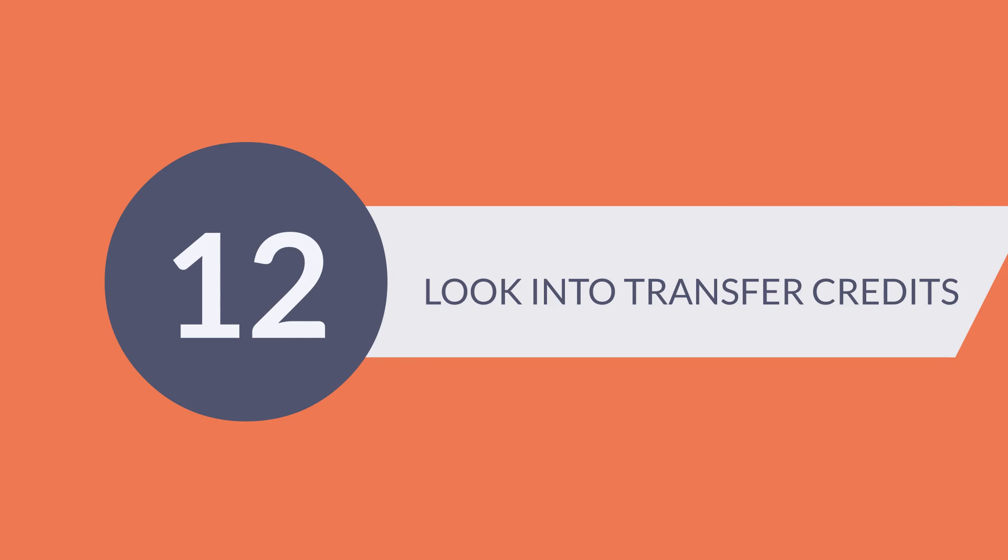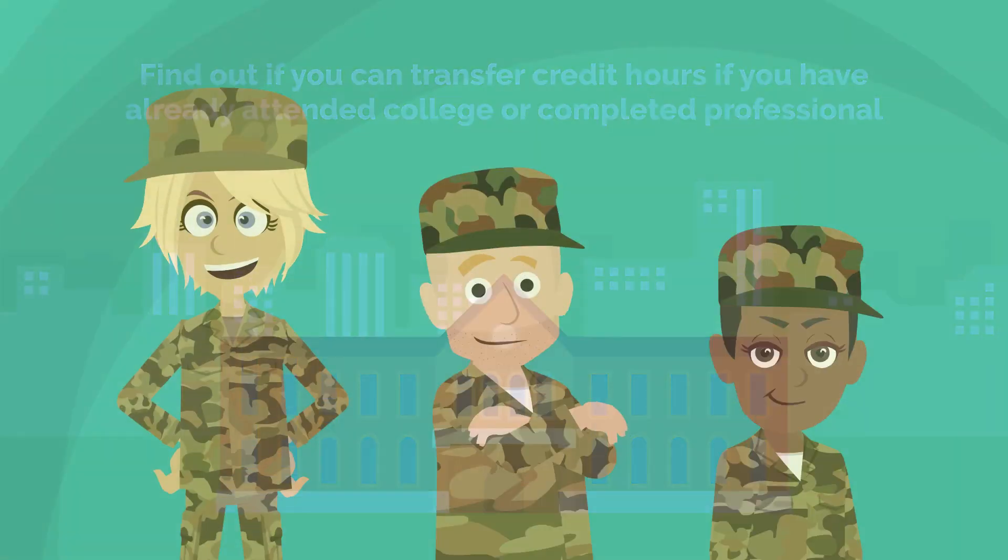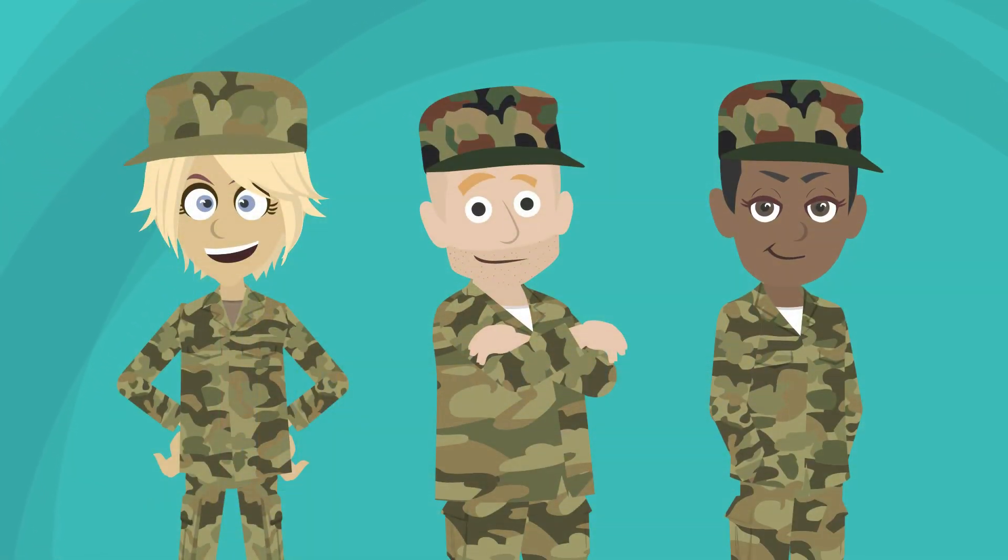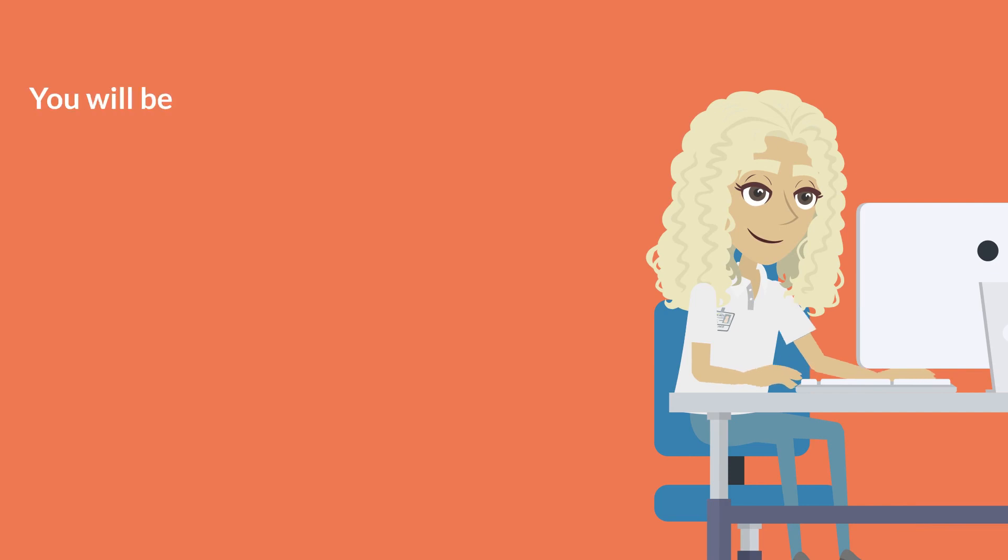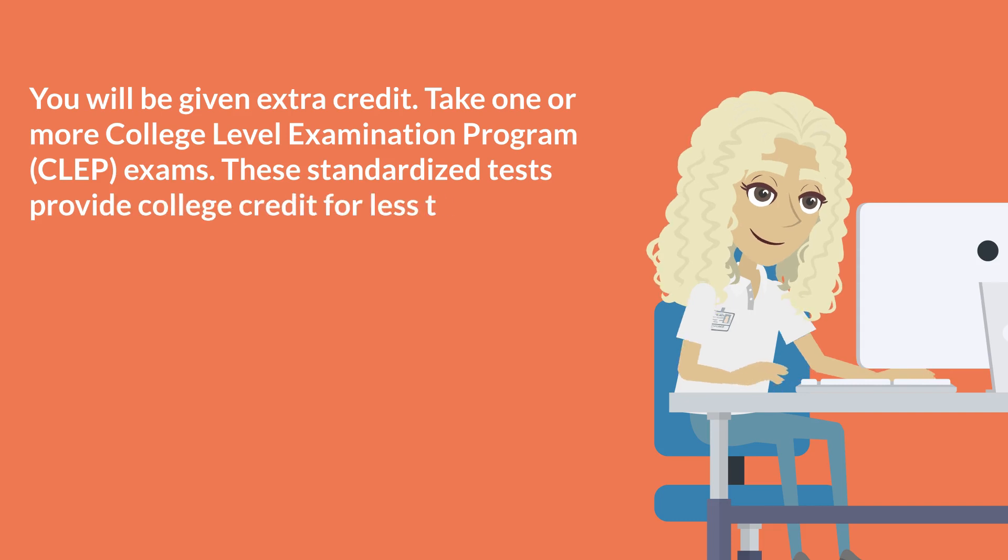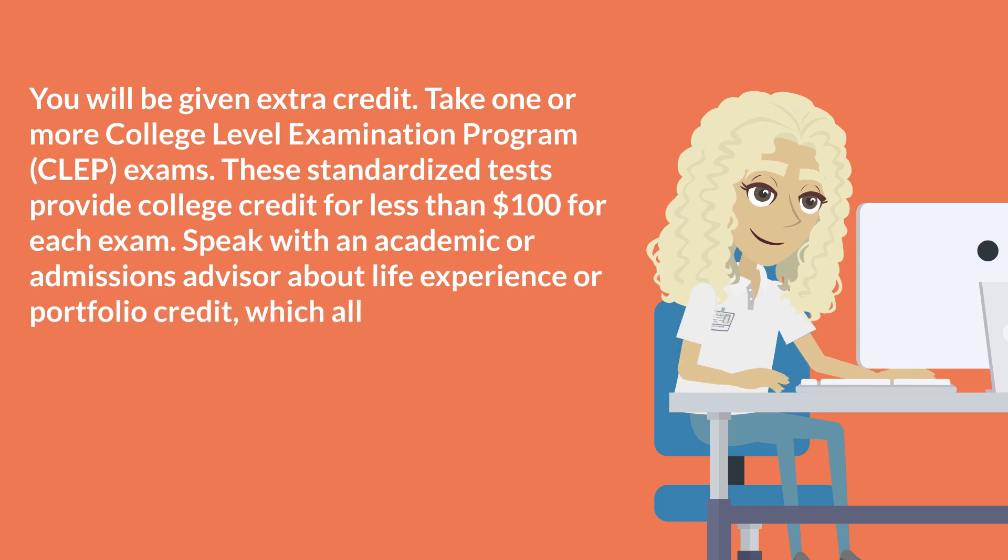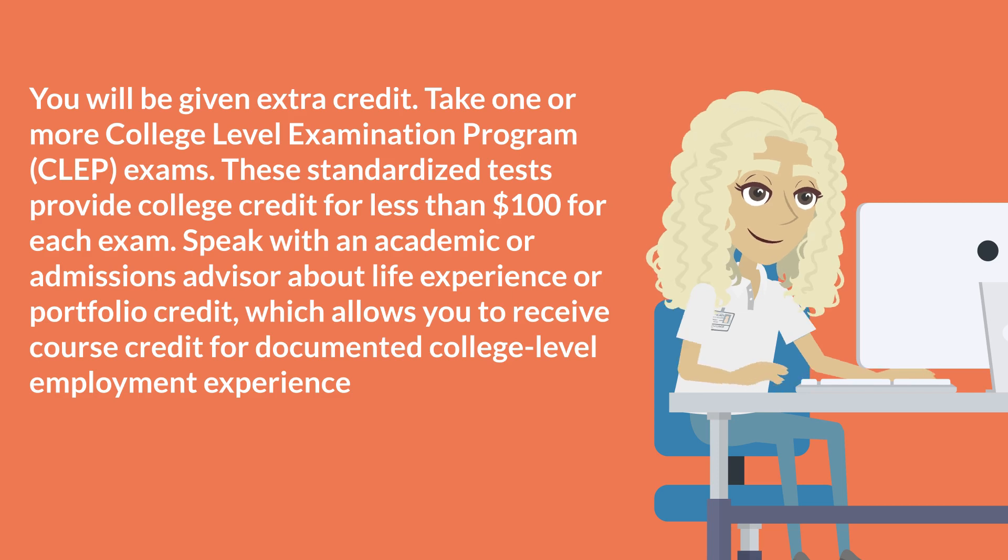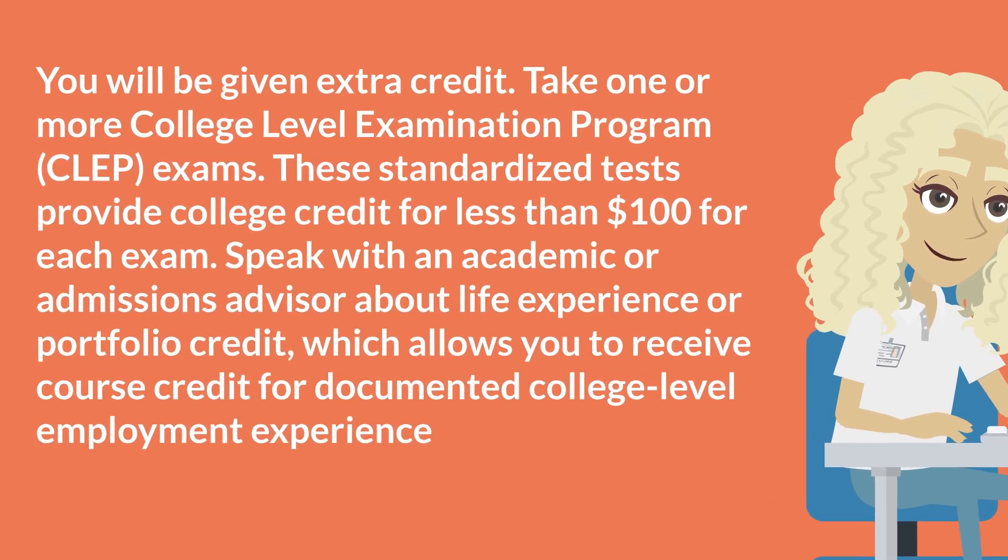12. Look into Transfer Credits. Find out if you can transfer credit hours if you have already attended college or completed professional or military training courses. If your credits are transferable, you may be able to finish your degree sooner and more affordably. Take one or more college-level examination program, CLEP, exams. These standardized tests provide college credit for less than $100 for each exam. Speak with an academic or admissions advisor about life experience or portfolio credit, which allows you to receive course credit for documented college-level employment experience.